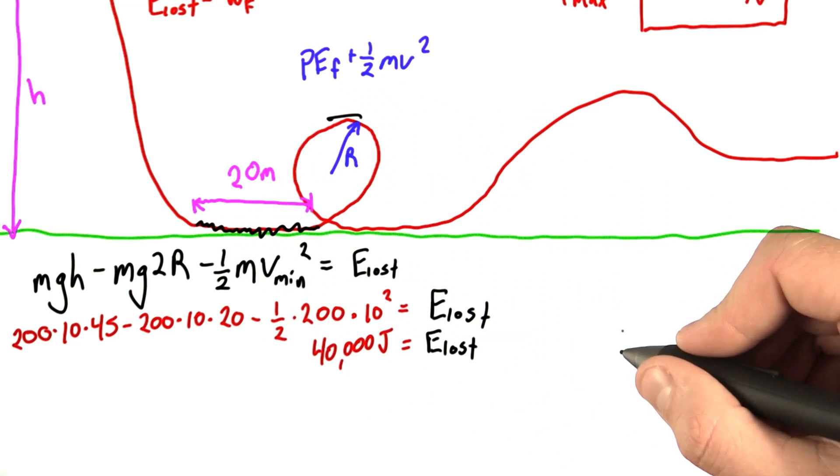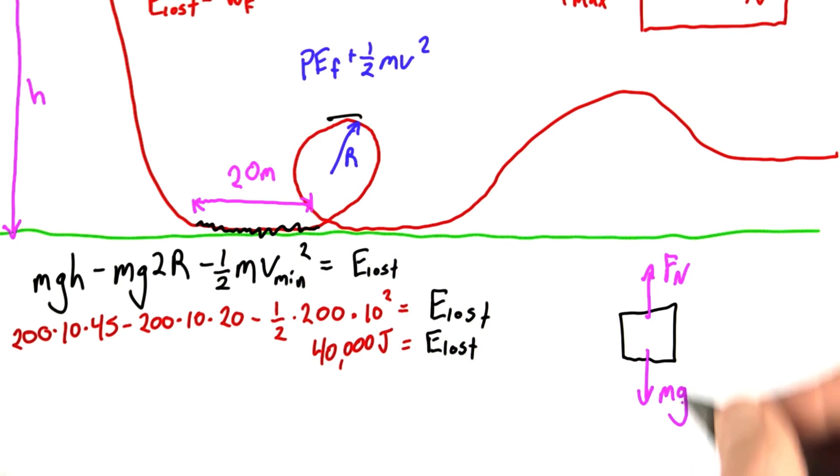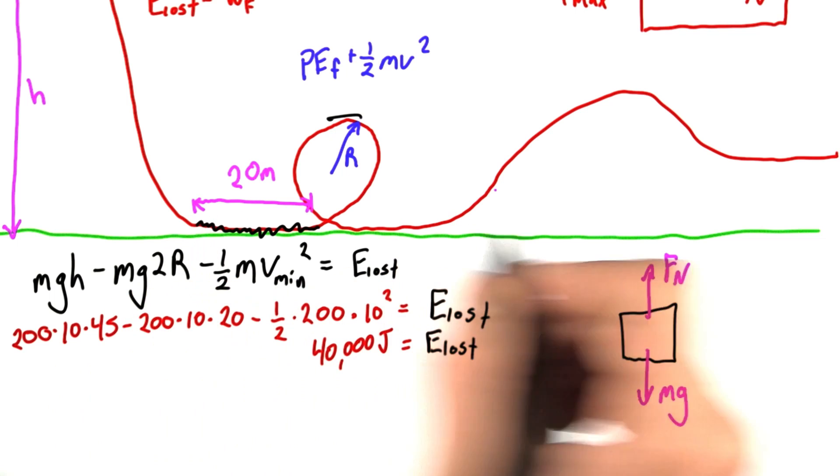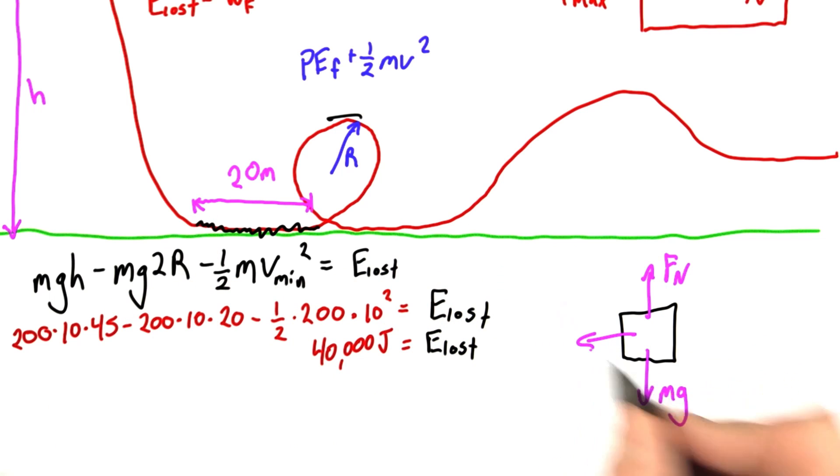Let's take a look at a force diagram for the car. We've got our standard weight and normal force, and since the car is moving to the right, friction is pointing to the left. And note that this is exactly parallel, though in the opposite direction, as the direction of motion.